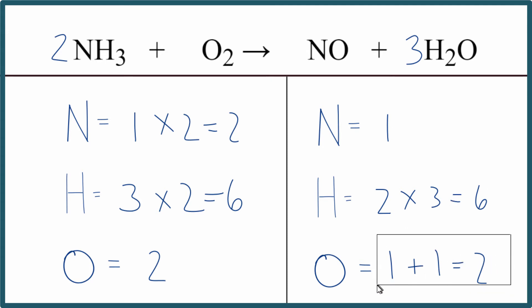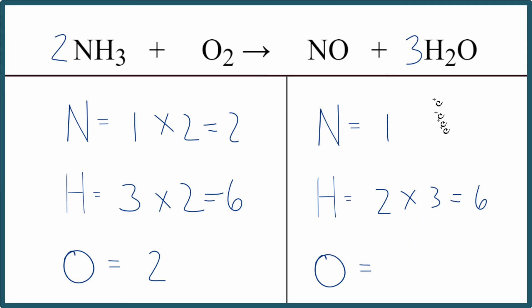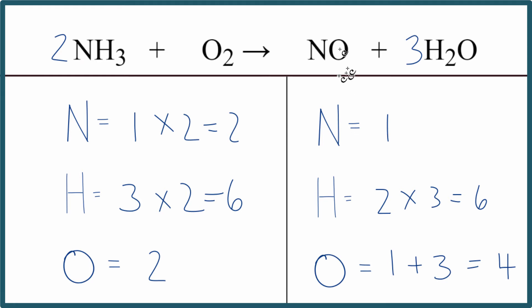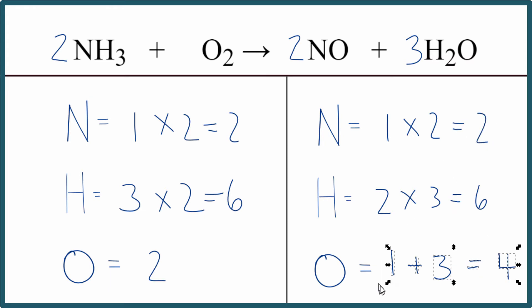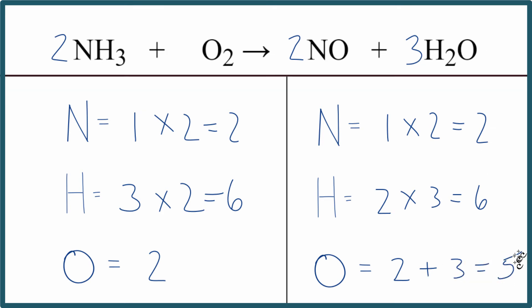I do need to update the oxygens. For the oxygens, we have one plus one times three — that gives us four oxygens. I think I want to do the nitrogen next, because when I change the nitrogen, that'll change the oxygens again. So let's put a coefficient of two in front of the NO: one times two, so we've balanced the nitrogen atoms. Let's update our oxygens again — one times two gives us two oxygens, plus one times three gives us five oxygen atoms.